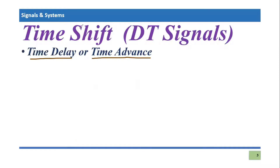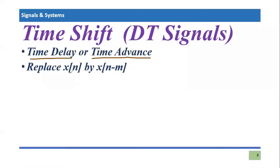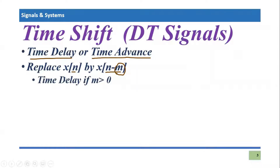For discrete time signals, we replace x(n) by x(n-m), where n is the time variable replaced by n-m. Remember, in continuous time signals we were replacing t by t-tau. Here, m indicates the value of the time shift, and depending upon its value we will have either time delay or time advance.